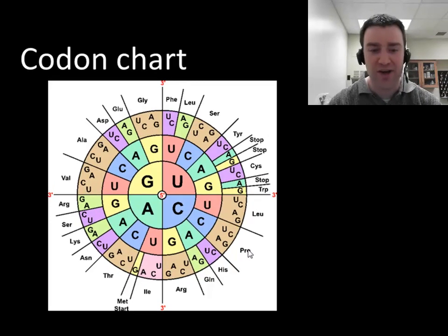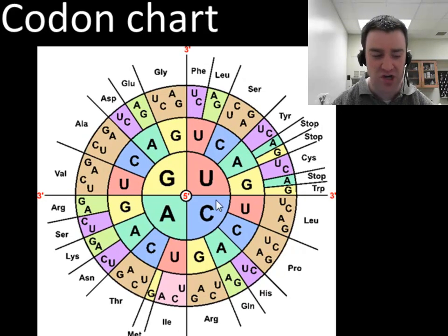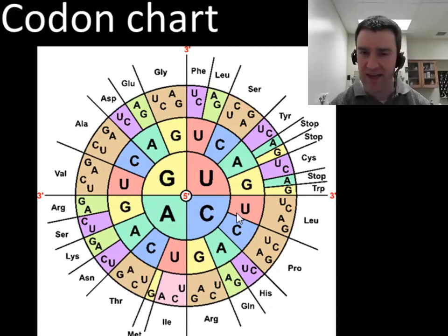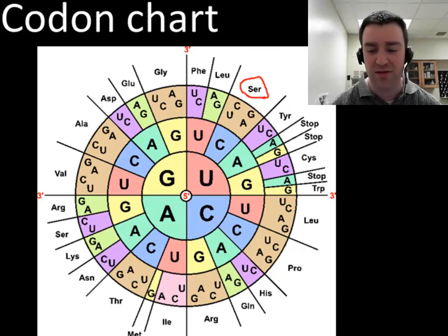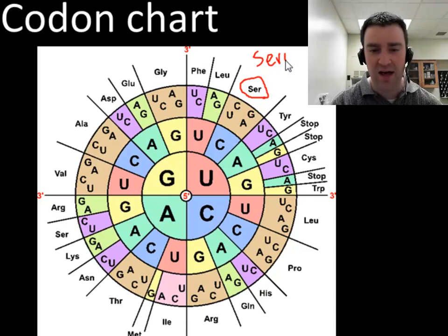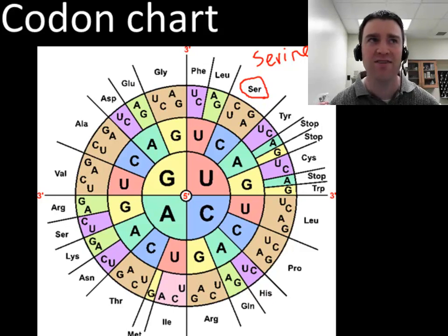We've cracked the code — we've figured out how mRNA codons call for specific amino acids. This chart shows three-letter abbreviations of amino acids; for example, SER stands for serine. You won't have to memorize the amino acids for this course — you'll just use the three-letter abbreviations. You'll always have access to a chart in order to do translation.